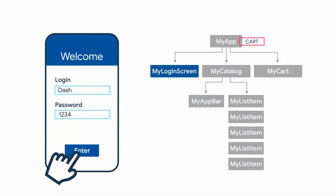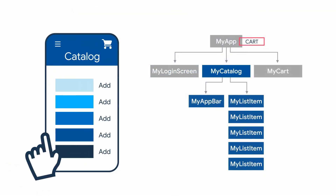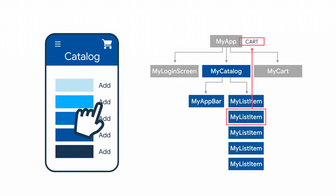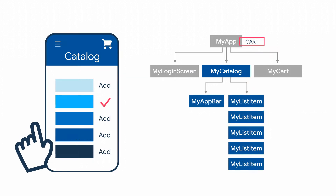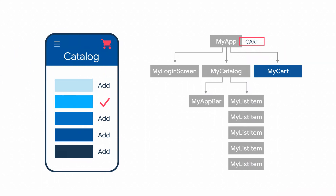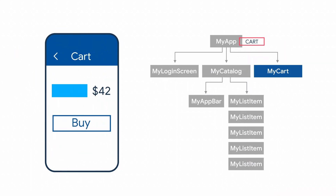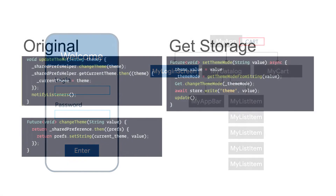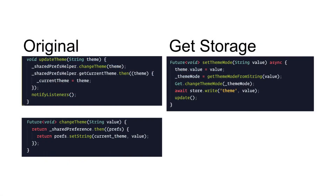So GetX gives the power to manage dependency problems. If you have to send some data from one page to another page, like one screen to another screen, you need to use state management and dependency. You also need to use navigation management.